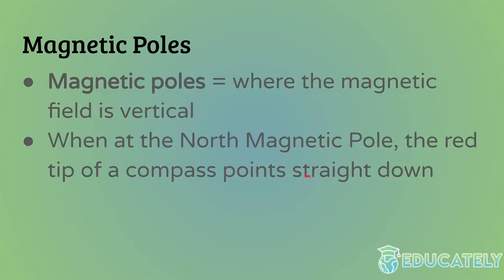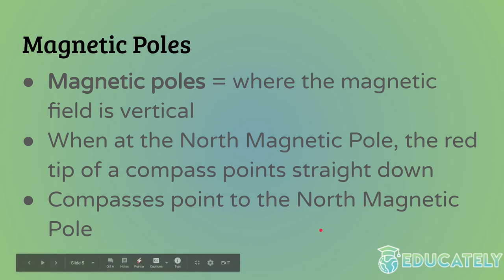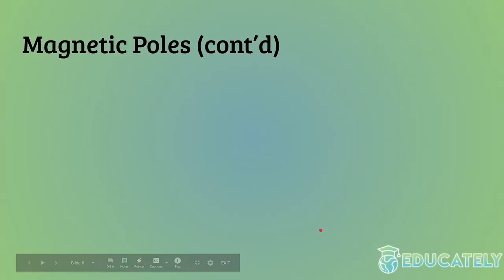The important thing to know about the north magnetic pole is that compasses point to it. If you went to the north magnetic pole and allowed a compass to point straight down, the red tip would point straight down. Generally speaking, compasses point to the north magnetic pole, not the north geographic pole.